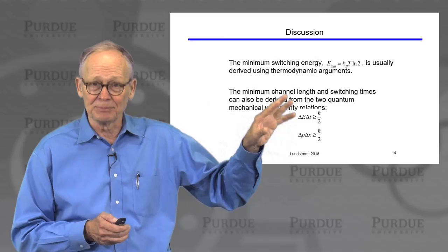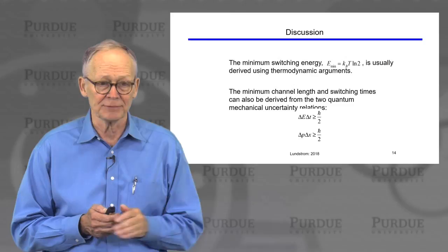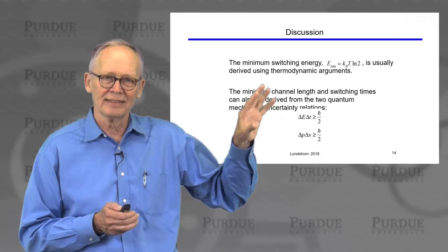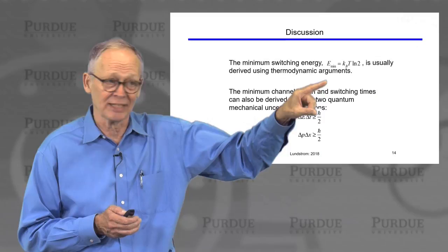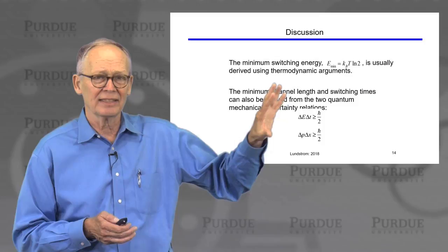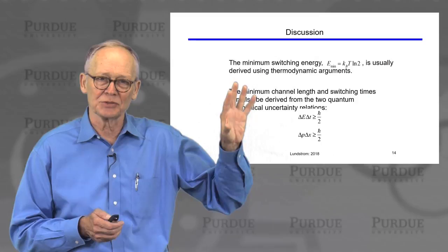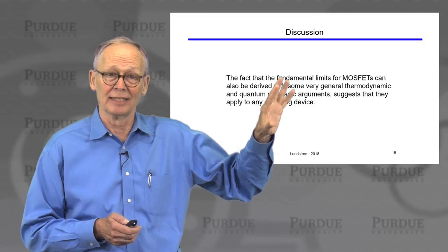The minimum switching energy from our simple argument can be derived in a much more fundamental way using thermodynamic arguments, yielding the same answer: kT log 2. It's also worth noting that using the two quantum mechanical uncertainty relations, we can obtain the minimum channel length and minimum switching speed from very fundamental arguments not specific to a MOSFET itself. This suggests that these are fundamental limits for any kind of switching device we might imagine.